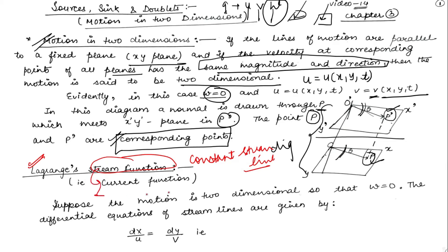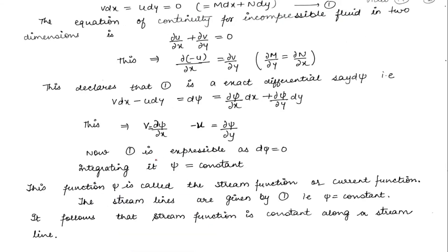Here we have to understand: suppose the motion is two-dimensional, so where we are talking about 2 dimensional motion, obviously the third axis along the velocity component will become 0. This way w is equal to 0. The differential equation for the streamline, so streamlines: